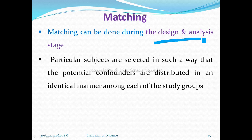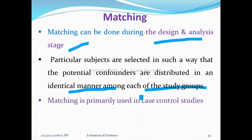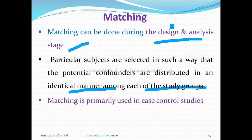Matching can be done during both design and analysis stages. Particular subjects are selected so that potential confounders are distributed identically among each study group — between treatment and control groups. Matching is most commonly done in case-control studies. A matched case-control study controls confounding because the confounding variable is known, selected, and matched for that variable.